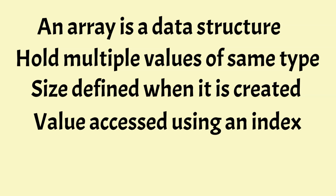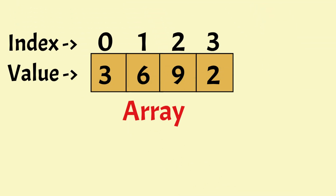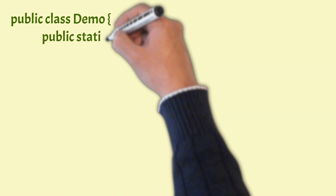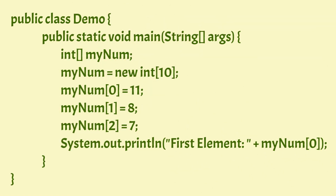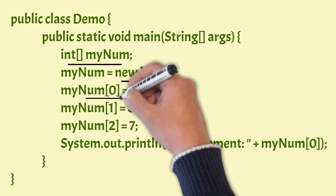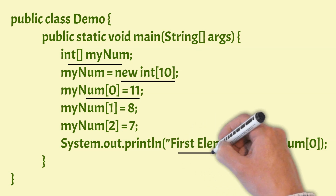Let's have an example of a 1D array. This is an array of 4 elements. You can see all the elements are integers and homogeneous. The index of the array always starts from 0 and goes up to n-1 elements. In this Java program, we have declared an array of type int, created it with size 10, initialized the array, and at the end printed the first element of the array.